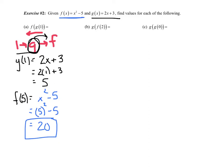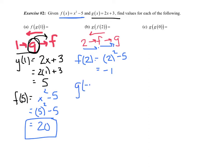Let's try G of F of 2. Working backwards: 2 goes into F first. F of 2 is 2 squared minus 5, which is 4 minus 5 equals negative 1. Now take F's output into G: G of negative 1 is 2(−1) plus 3, which is negative 2 plus 3 equals positive 1.